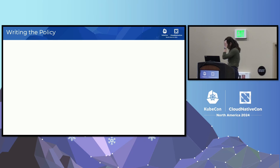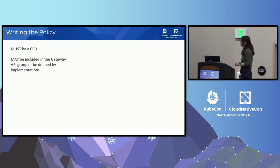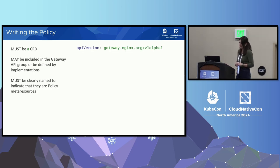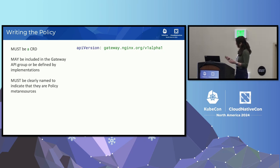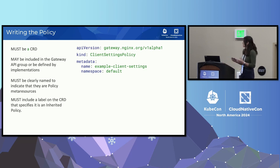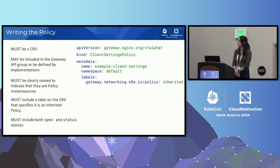So I'm writing an inherited policy. Going through the spec rules: it must be a CRD. It may be in the Gateway API group or defined by implementations — this one will be in NGINX's group, so we add that to the API version. It must be clearly named to indicate it's a policy meta resource — we'll call it ClientSettingsPolicy, following what BackendTLSPolicy did. It must include a label on the CRD specifying it's an inherited policy — if it were direct, it would say direct instead. And then it needs a spec and a status.